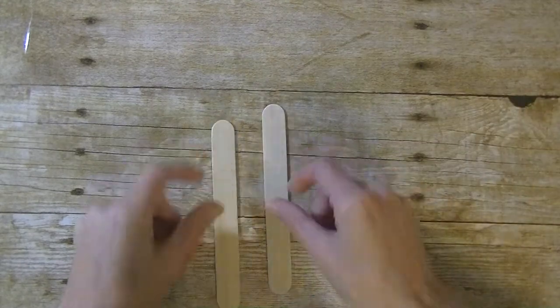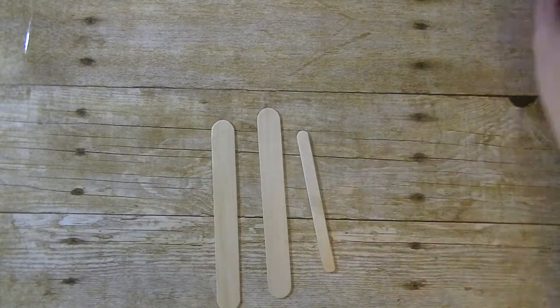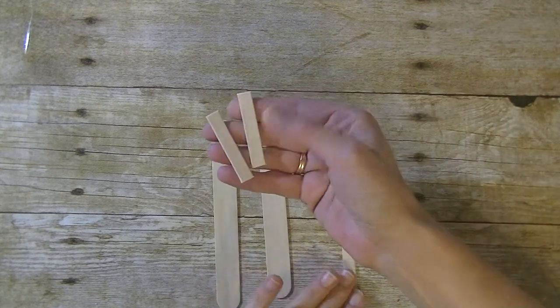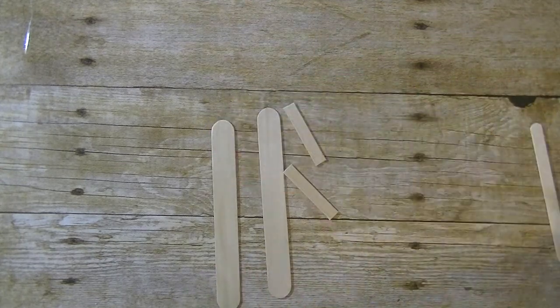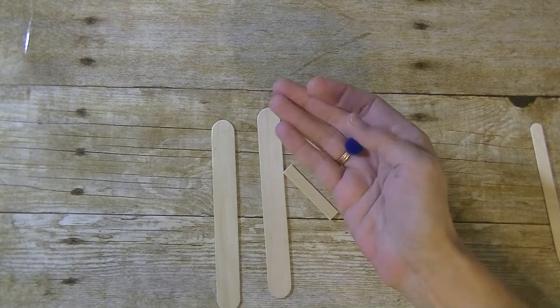What you will need for this one are two of the larger sized craft sticks, a regular size one - I took my regular one and did go ahead and cut that in half - you'll need a clothespin, and either a pom-pom, a wooden bead, or a button for the front.